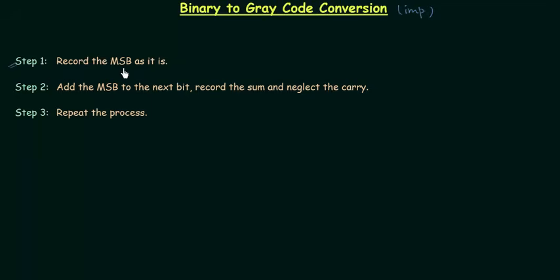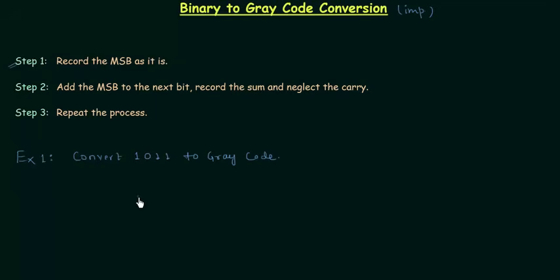In step number one, we have to record the MSB as it is. I will take one example to explain these three steps. We have to convert 1011 to grey code. The number in binary is 1011 — this one here is the most significant bit and this one here is the least significant bit. MSB is 1, so we record 1 here.